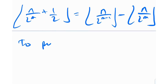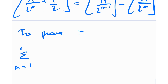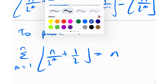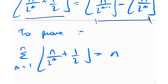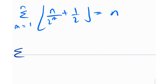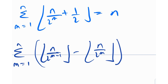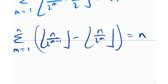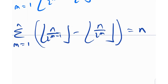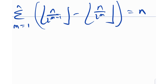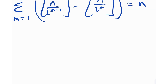So to prove Σ (m = 1 to n) floor(n/2^m + 1/2) = n, it suffices to prove that Σ (m = 1 to n) [floor(n/2^(m−1)) − floor(n/2^m)] = n. This telescopes very directly — no extra manipulation needed.